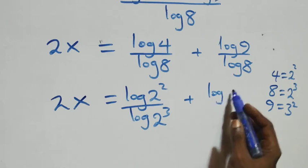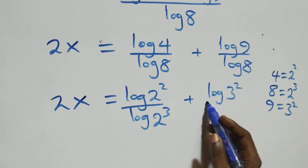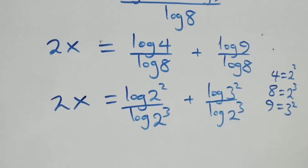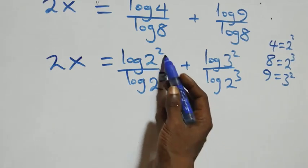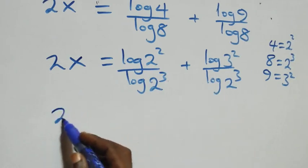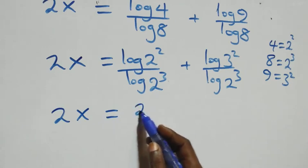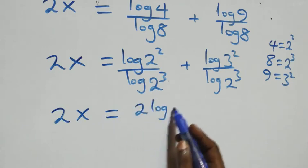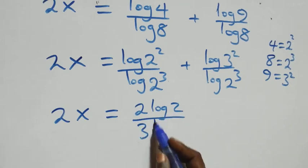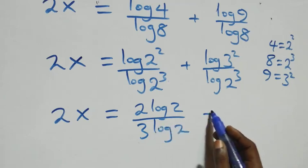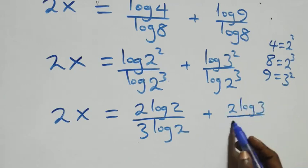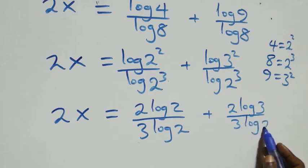We apply the power rule of logarithms. The exponents come out in front: 2 log 2 plus 2 log 3, all over 3 log 2. So 2x equals 2 log 2 plus 2 log 3 over 3 log 2.